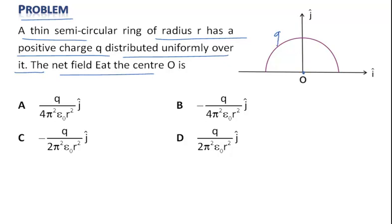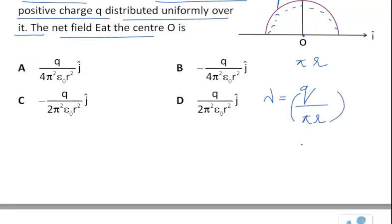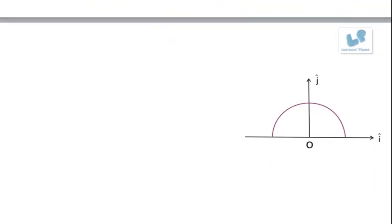E here, and charge q is uniformly spread across the length of the semicircular ring. Now what is the total length of the semicircular ring? It is πr, and total charge is q, so lambda, which is linear charge density, will be given by q/(πr).